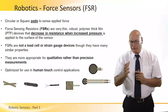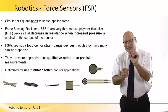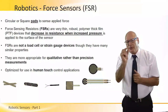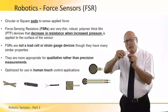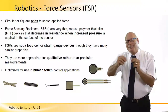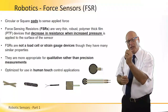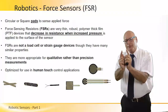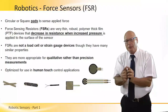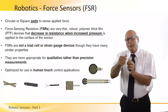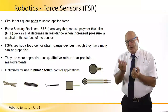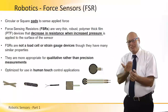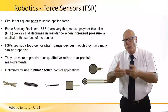FSR — force sensors — are very commonly used in robotics. They come in circular or square pad forms. Force sensing resistors (FSR) are very thin, robust, and made of a polymer thick film (PTF) that decreases resistance when pressure is increased. When you take a force sensor and bend it or apply force to it, the internal resistance goes down. According to the force applied, the resistance changes. We can calibrate that and create a table between forces and resistance, then apply pre-programmed force to the device.